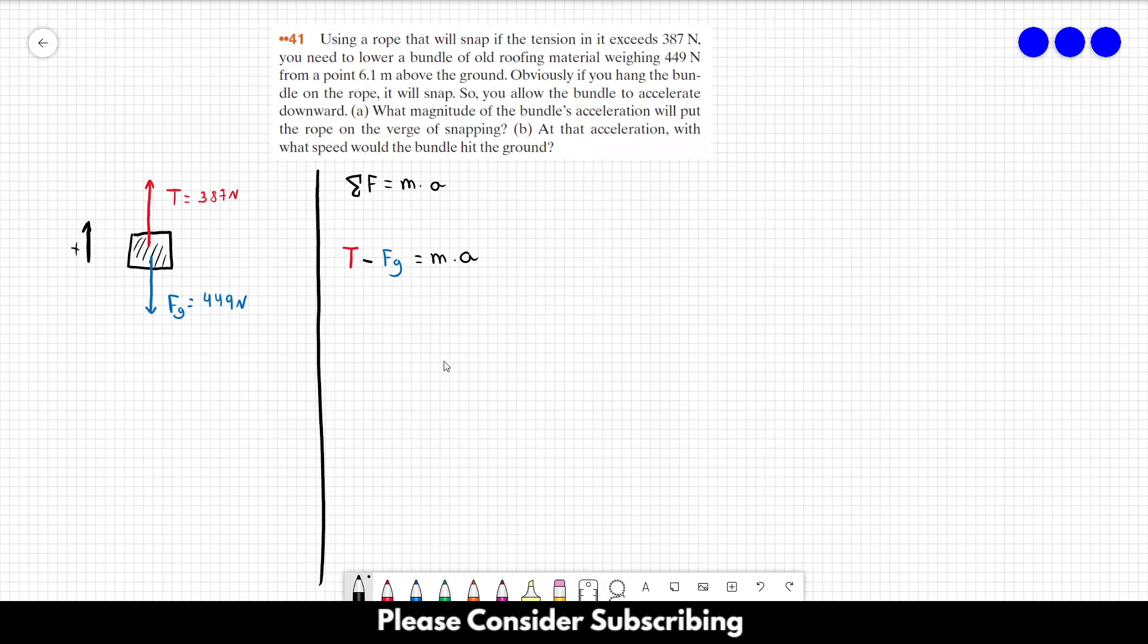So the only thing that we don't have in this equation is the acceleration, which is the answer of letter A, and the mass of the bundle. So the mass of the bundle can be calculated from the weight of the bundle. The weight of the bundle is equal to the mass times gravity. So M is equal to W over G.